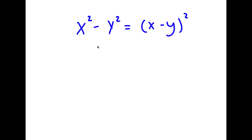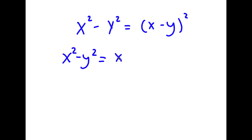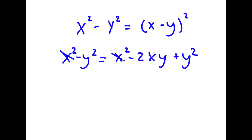In this problem, I have x squared minus y squared is equal to x minus y squared. To start, I'm going to expand x minus y squared. So now I have x squared minus y squared is equal to x squared minus 2xy plus y squared.